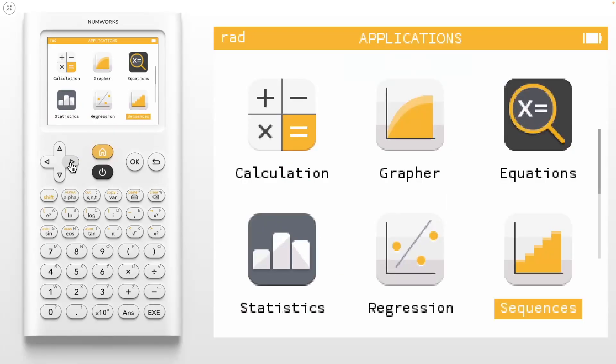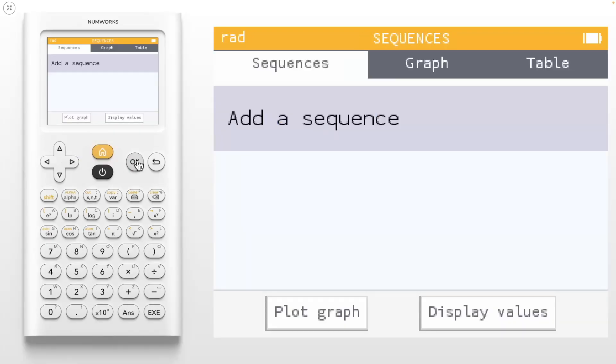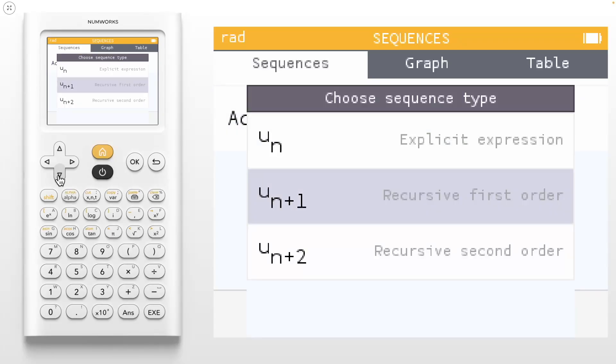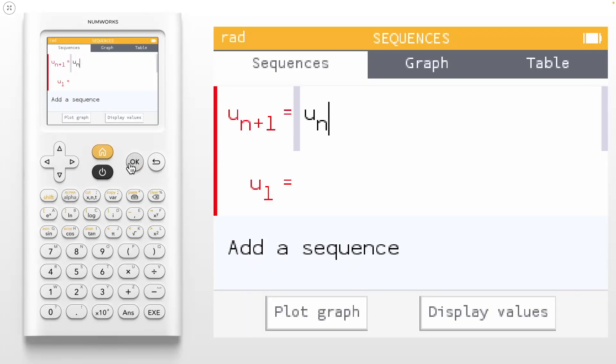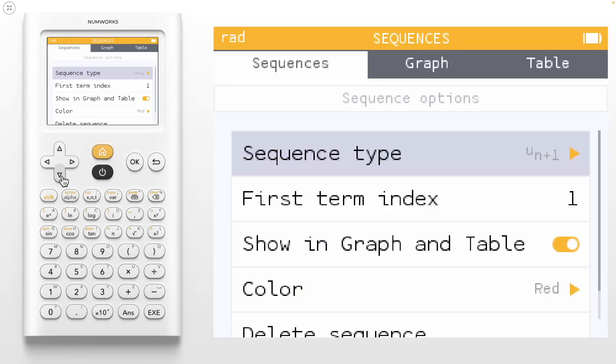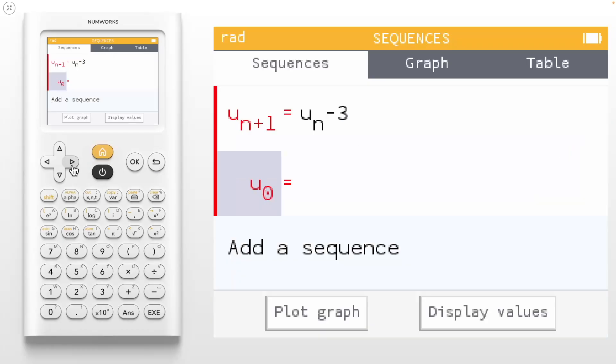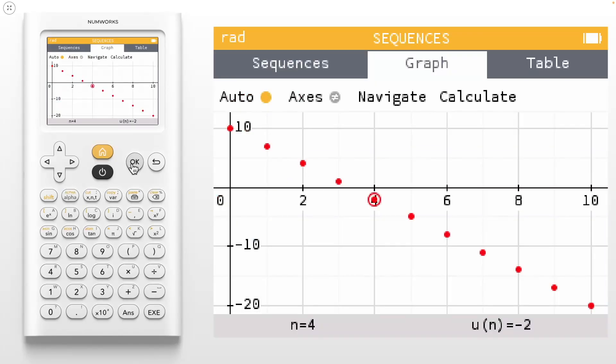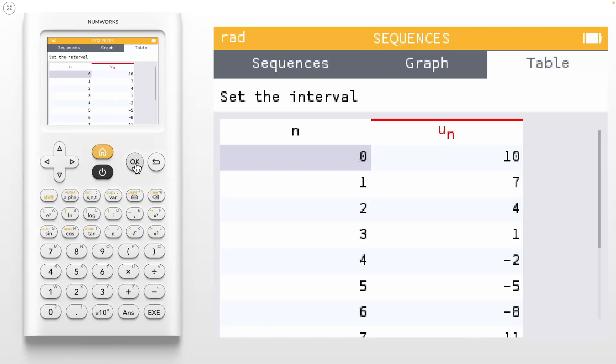The last app we're going to take a look at is the sequences app. This app is great for studying explicit and recursive sequences. First, let's start by adding a recursive arithmetic sequence. Let's have u sub n plus 1 equal u sub n minus 3. And let's set u sub 0 equal to 10. We can change our first term index by going into our options and replacing the 1 with 0. Once you have your sequence created, go down to plot graph. Here we can discuss how an arithmetic sequence is related to a linear function. Let's go look at the table. The table here works similarly to the grapher app. You can see the first 10 terms and can also edit any n value to quickly find any nth term. Let's find the value of the sequence when n equals 21.